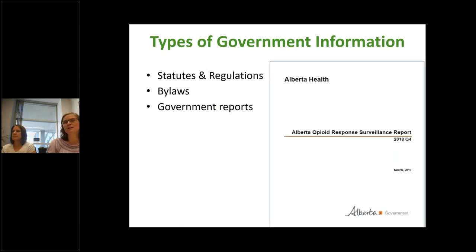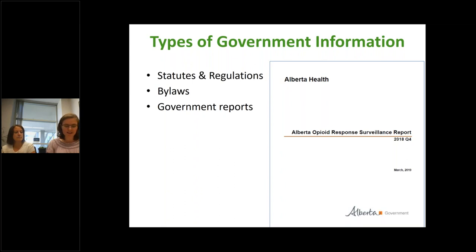We've also got government reports, which are often really useful sources of information dealing with specific activities or topics. For example, there's the Alberta opioid response surveillance report. Annual reports from individual departments can also be useful — if you have a specific topic that's the purview of a specific department, sometimes you can get information from their annual reports relating to that.